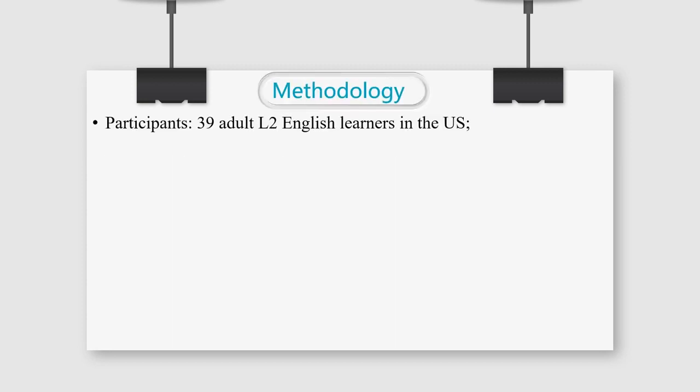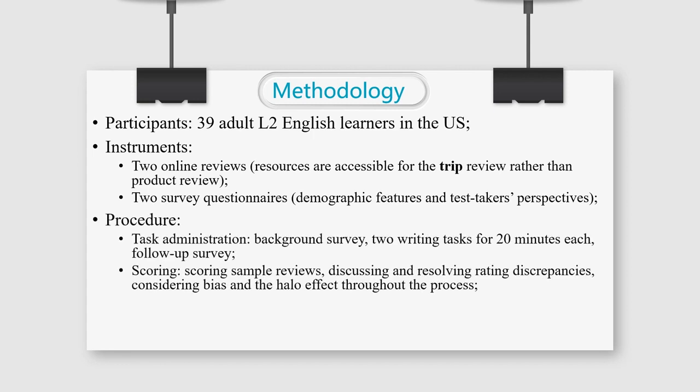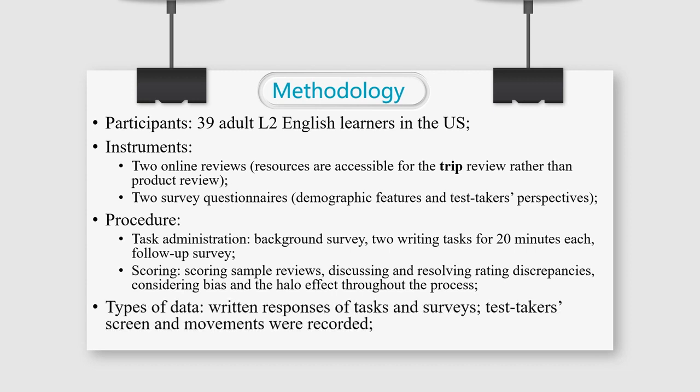Next, methodology is demonstrated. 39 adult L2 English learners in the United States, most of whom were L1 Japanese speakers, participated in the study by completing two writing tasks. One was the trip review with writing resources, while the other was product review without them. Also, two survey questionnaires, which concerns demographic features and test-takers perspectives on the test, were delivered before and after the test respectively.